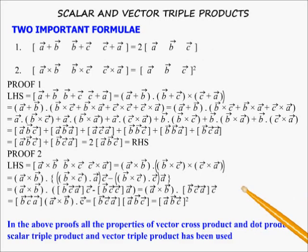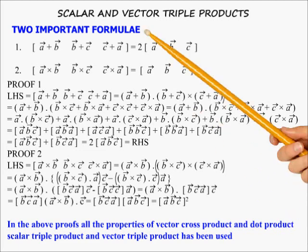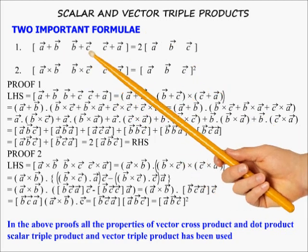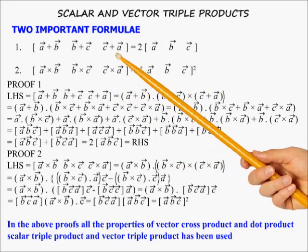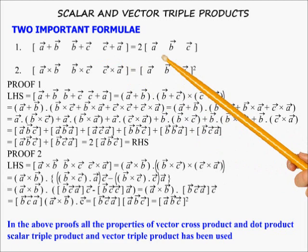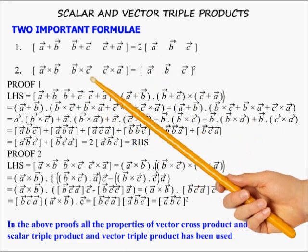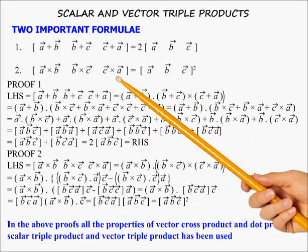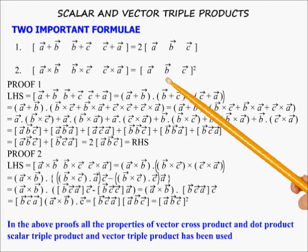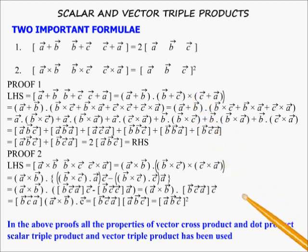These triple products lead to two important formulas. First: [a+b, b+c, c+a] = 2[a, b, c]. Second: [a×b, b×c, c×a] = [a, b, c]². These formulas are very useful for solving problems.